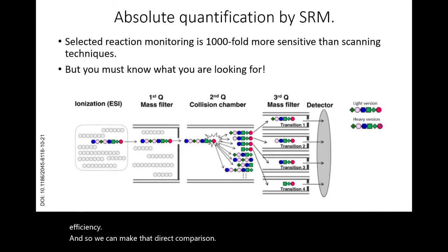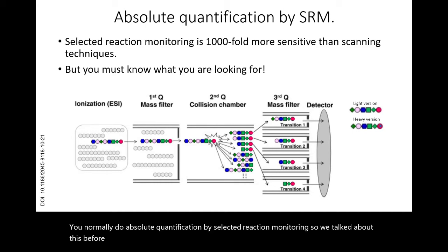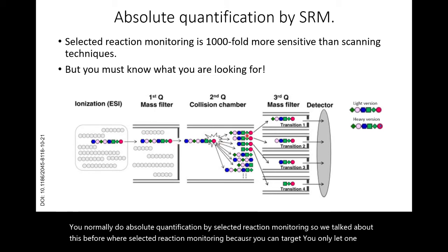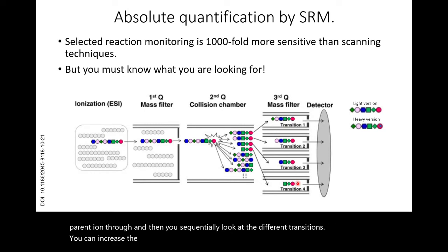You normally do absolute quantification by selected reaction monitoring. Because you can target — you only let one parent ion through and then sequentially look at the different transitions — you can increase the sensitivity up to a thousand-fold depending on the molecule. But you must know what you're looking for.